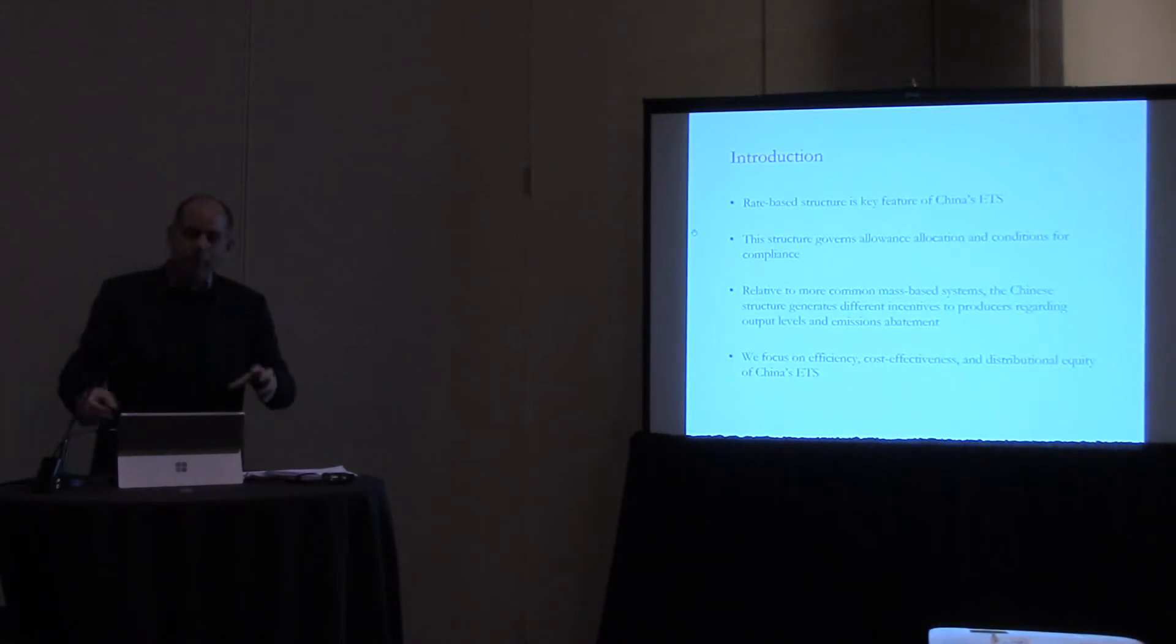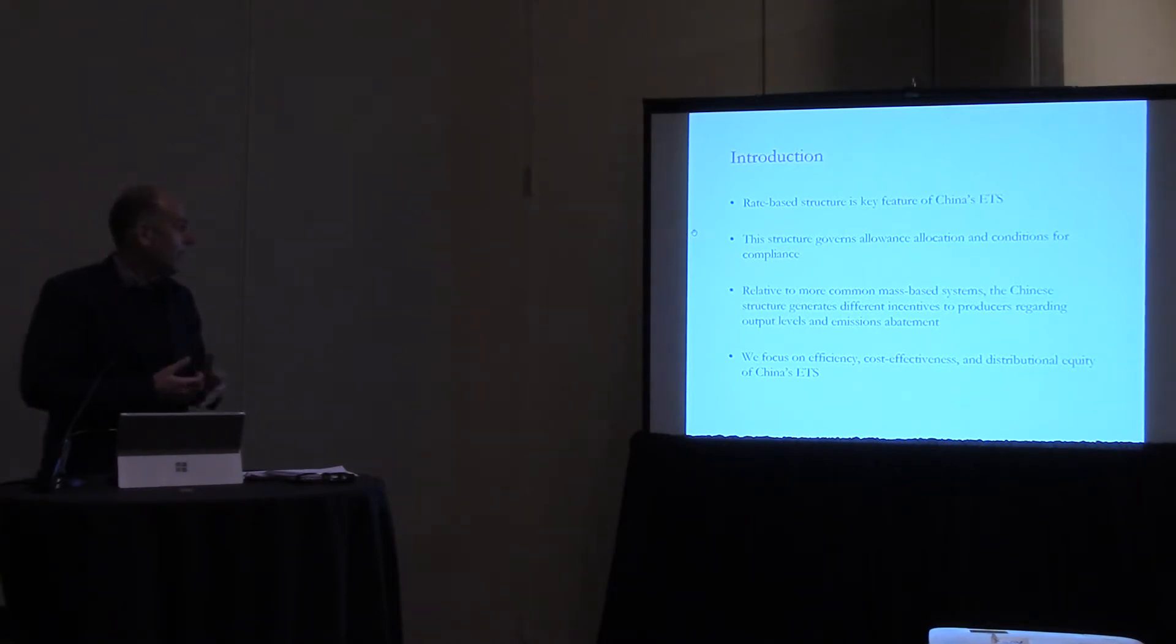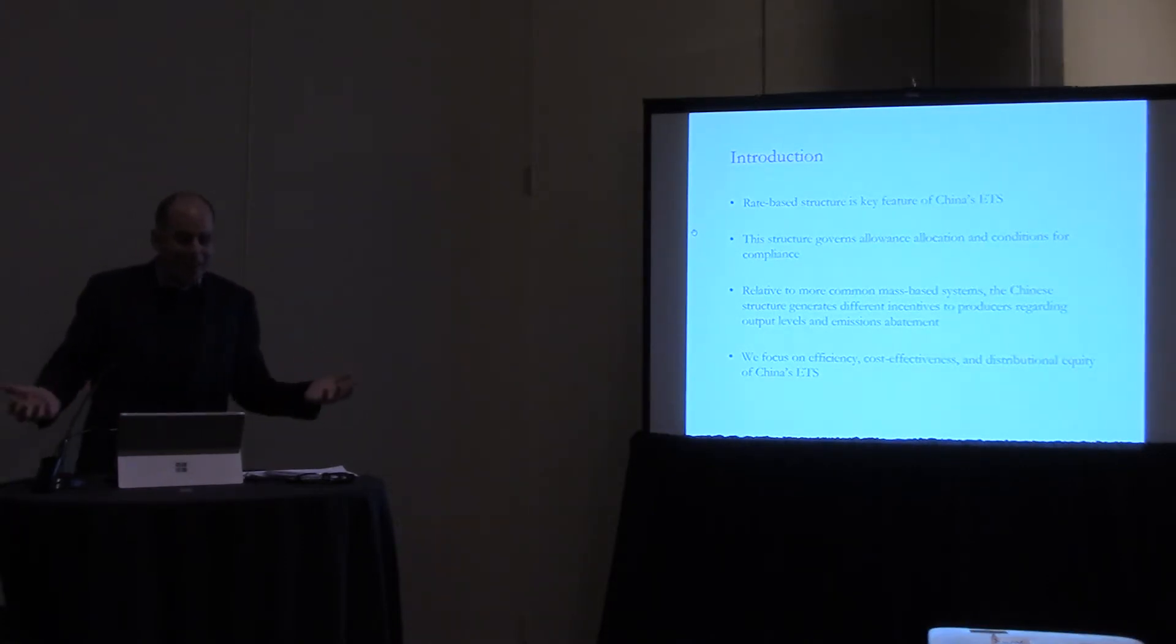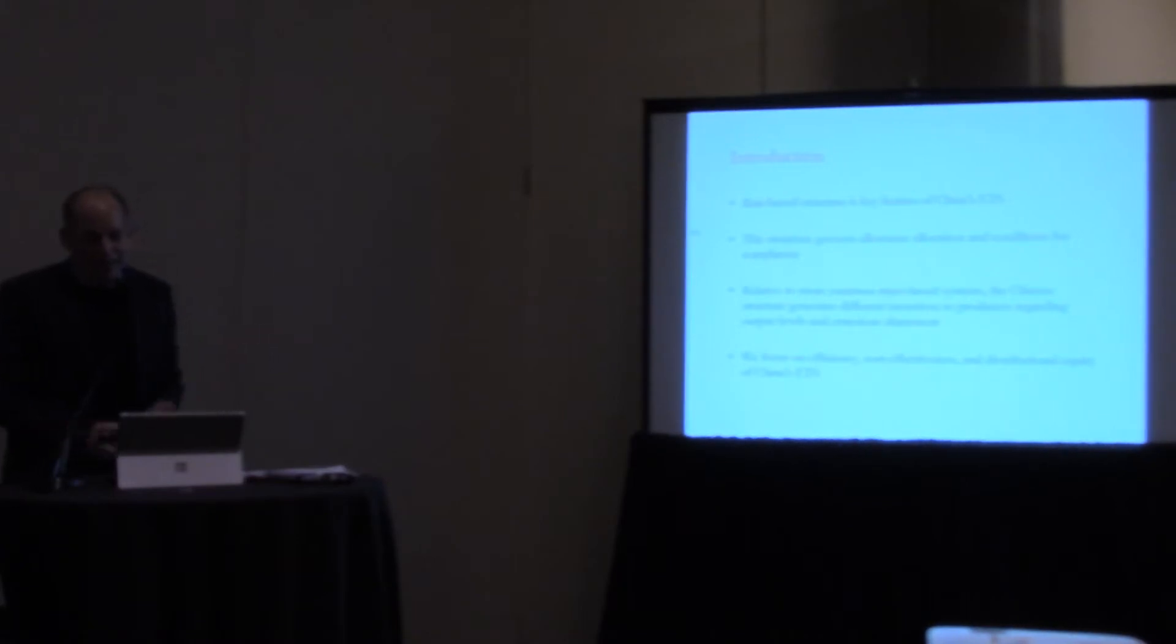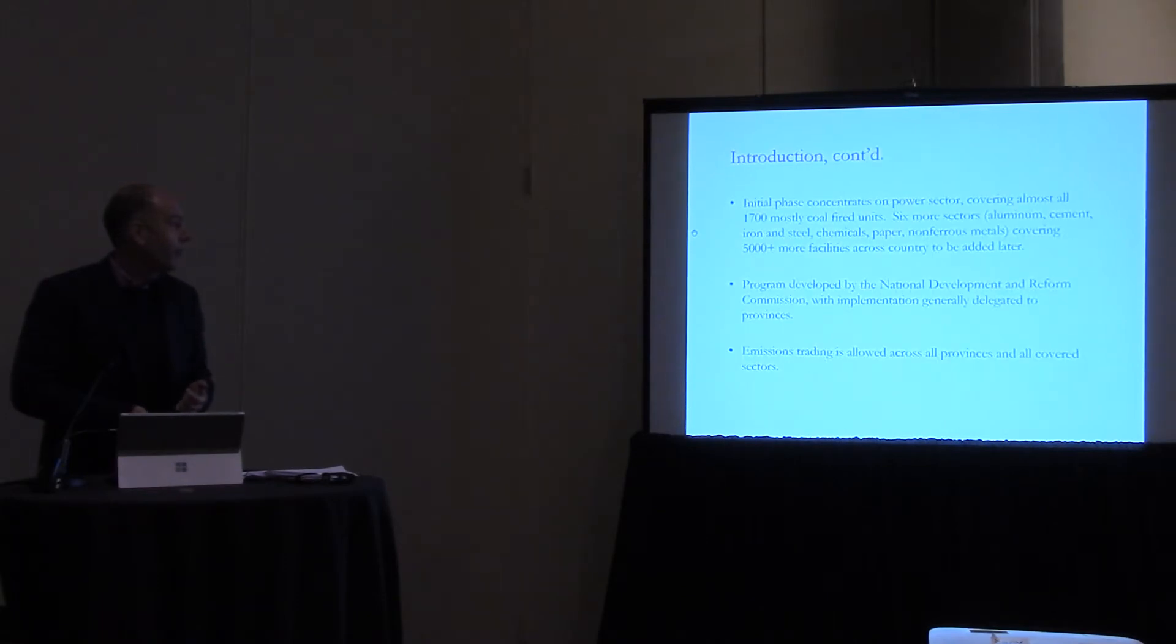So this structure here is really key for how allowances are allocated and how compliance is achieved in this particular system. So when we teach our undergrads, we usually say there's some mass-based standard where compliance is achieved by how much you emitted plus how many allowances you have. There's a fixed cap and that's that. The particular design features of this particular system generate very different incentives for producers. And this links to Valerie's paper later regarding what the ultimate emissions level is that we're going to see. So this particular paper focuses on what environmental economists focus on, which is efficiency, cost effectiveness, and also the distributional equity issues of this trading system.